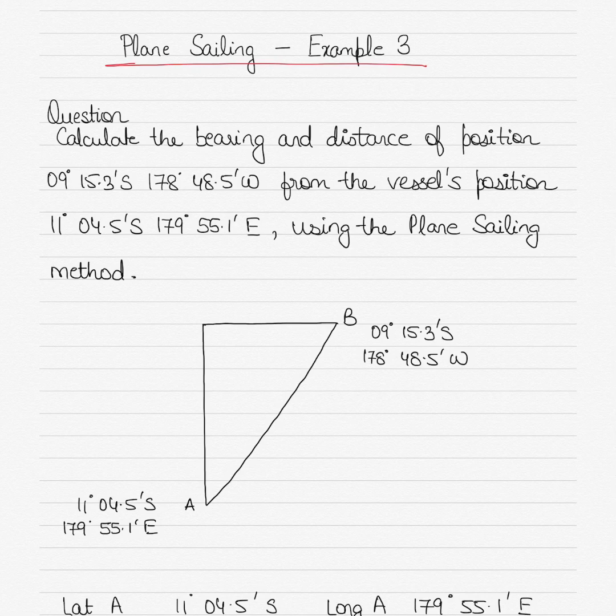Plane sailing is used when the distance involved between two positions is less than 600 nautical miles. We can assume that the earth is flat and the curvature of the earth is not taken into account in terms of distance calculation. We assume that flat lines can be drawn as courses between two positions.